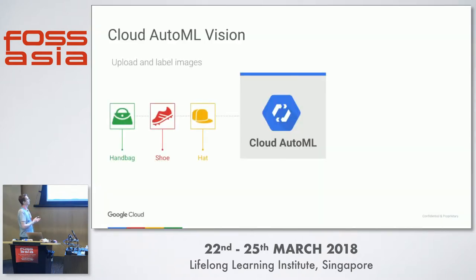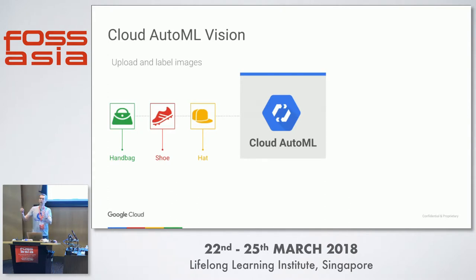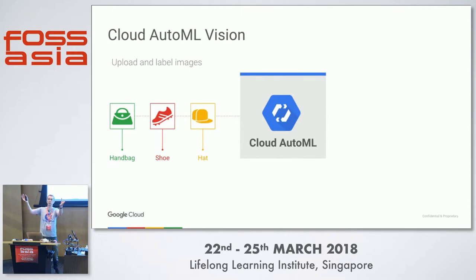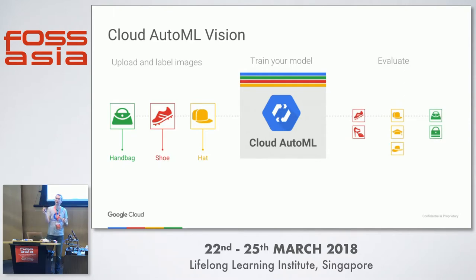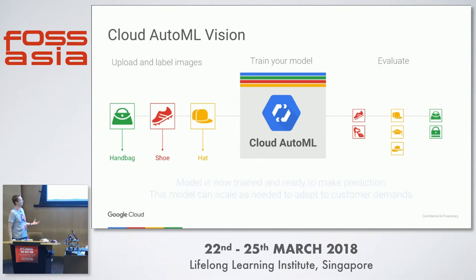We have a service called Cloud AutoML, but the concept is generic. You give the service example data — in case of images, for example, you give it a lot of examples of handbags, then examples of shoes, then hats. You just feed it labeled data and it learns to recognize between those. When it learns the recognition, you have your own model, and then you call your own custom model with your categories and get back a response: yes, that's a shoe, and that's a handbag — without TensorFlow coding.